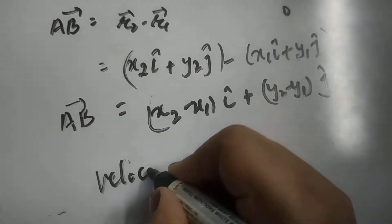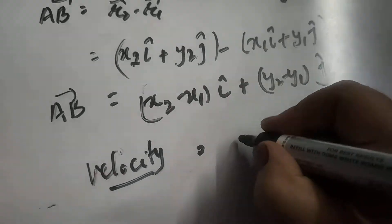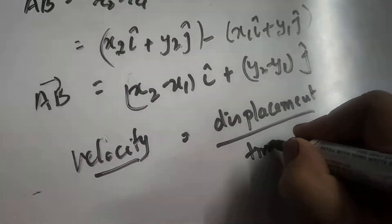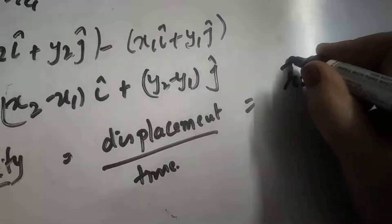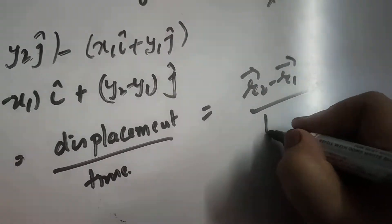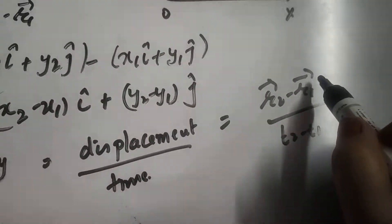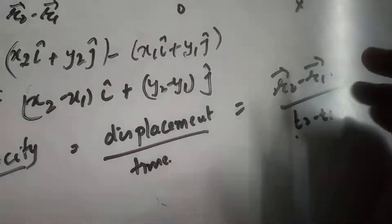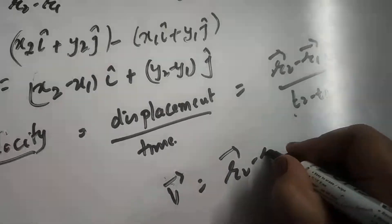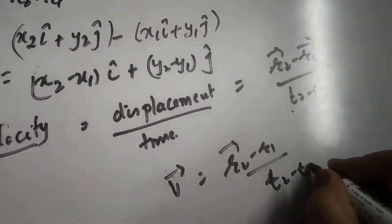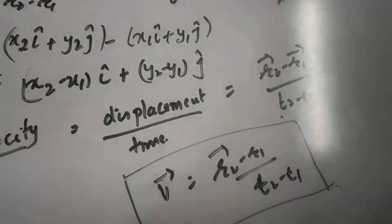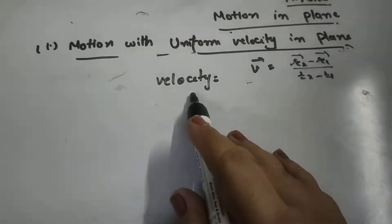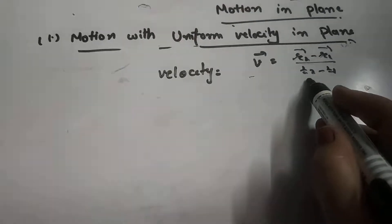To find out velocity: velocity equals displacement upon time. We know that displacement is given by R2 vector minus R1 vector divided by T2 minus T1, since at time T1 the position of the particle is R1 and at T2 the position is R2. So the velocity vector V is represented as R2 minus R1 upon T2 minus T1. This is the velocity associated with the particle when it is moving in a plane.